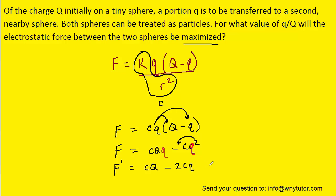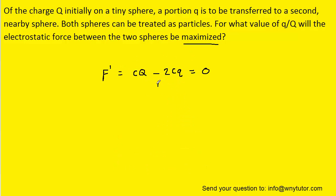We're now going to set the derivative equal to zero in order to maximize the function. We'll then add 2CQ to the other side of the equation. We could also divide out the C. And since we're trying to find the ratio of little q to big Q, perhaps we can divide both sides by capital Q.